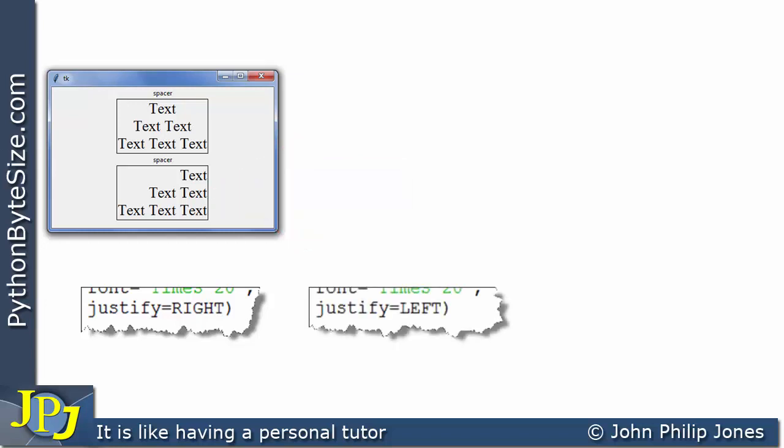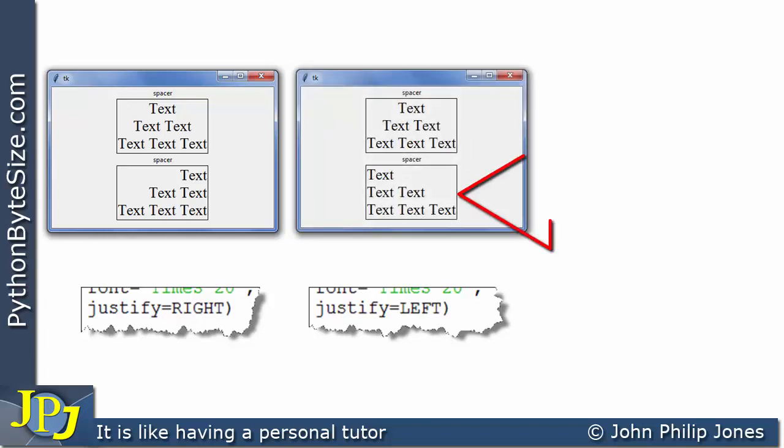If we look at this snippet of code, justify is now assigned LEFT. If we have a look at what we will get when that program runs, it's shown here. If you look at this label, you can see the text has been justified to the left.